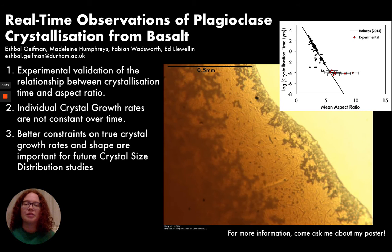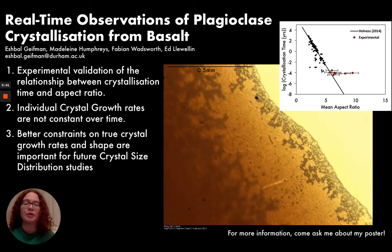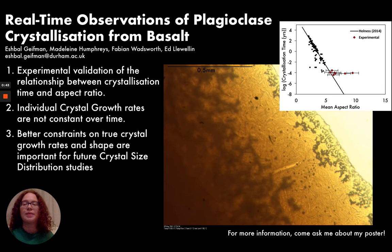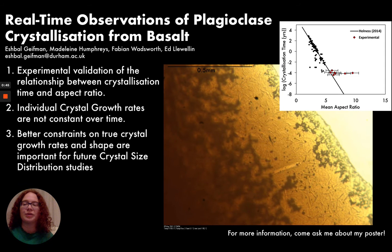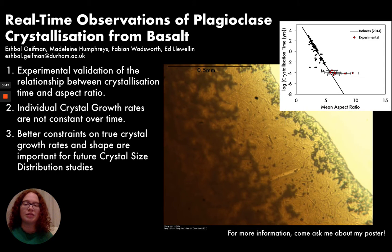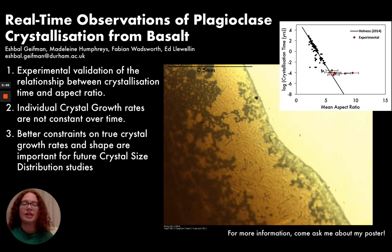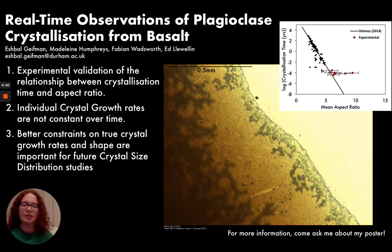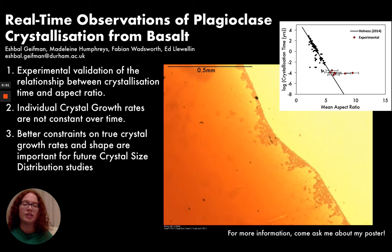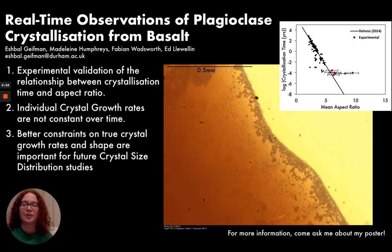I used the results from the quench products to test the relationship proposed by Holness between the crystallization time and the mean aspect ratio of crystals. Aspect ratio is an important indicator of 3D crystal shape, as the 2D aspect ratio is equal to the 3D short to intermediate axis ratio.